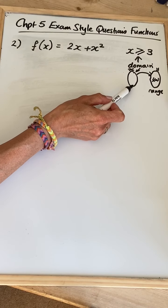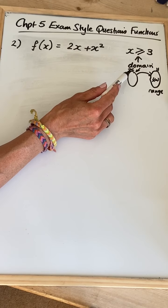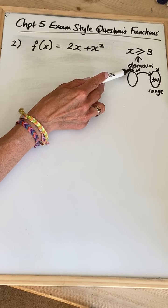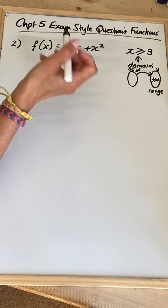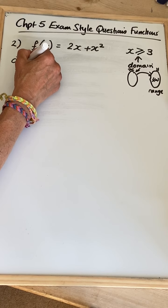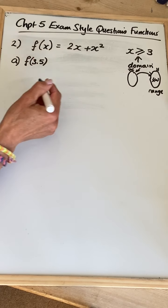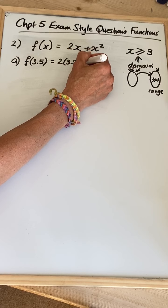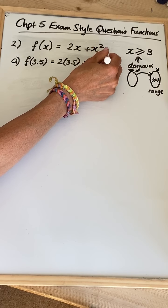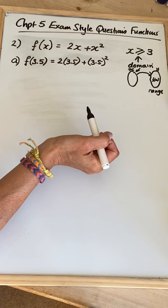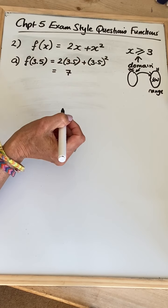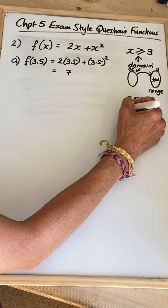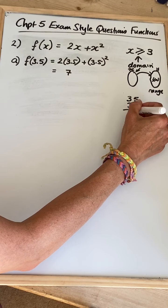Here we're saying that x has got to be greater than or equal to 3, so if we were writing all the numbers into the domain, we would start at 3. They can be any value, not just integers. So the first part of the question — a standard question, sort of a bit like a GCSE — is f of 3.5. So just substituting everywhere there's an x, put in a 3.5 instead. 2 times 3.5 is 7, and 3.5 squared — I'm just going to pretend this is on a non-calculator paper.